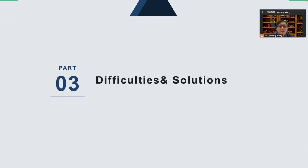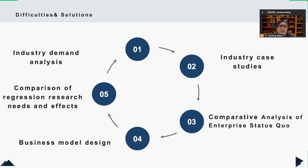Moving on to the difficulties and solutions. During the process of research, I encountered many problems. My research, analysis, and verification are carried out in a circulation mode of five stages. Industry demand analysis is carried out mainly through online retrieval, industry reports, and bulk access. For industry case analysis, I obtained and analyzed cases of digital transformation through online retrieval, industry company website retrieval, and bulk access. In terms of enterprise status and comparative analysis, I based on the current situation and comparative analysis of enterprise digital transformation and business mode. Business mode design is accomplished through industry case studies and business model analysis.